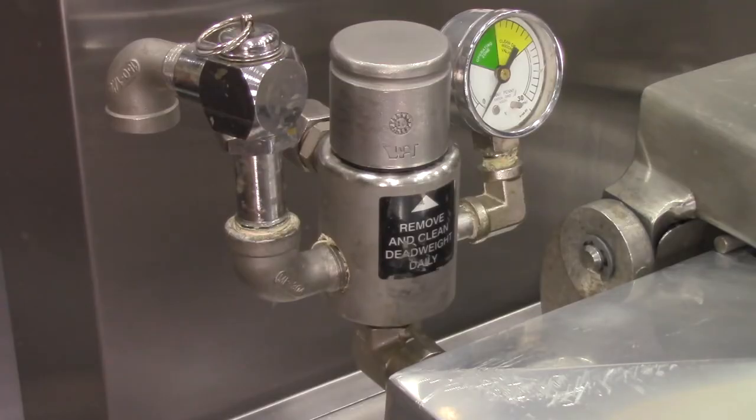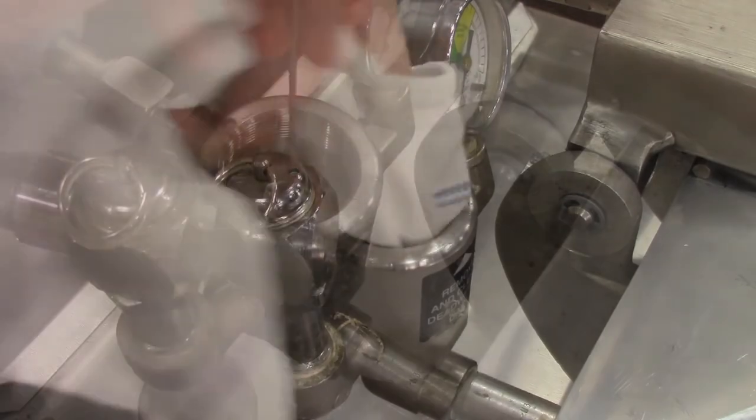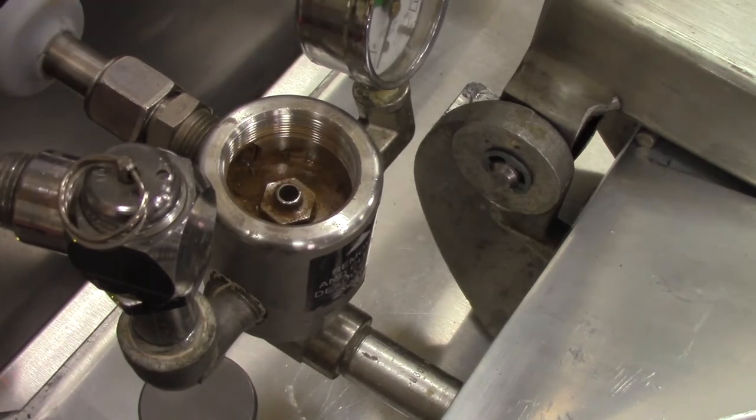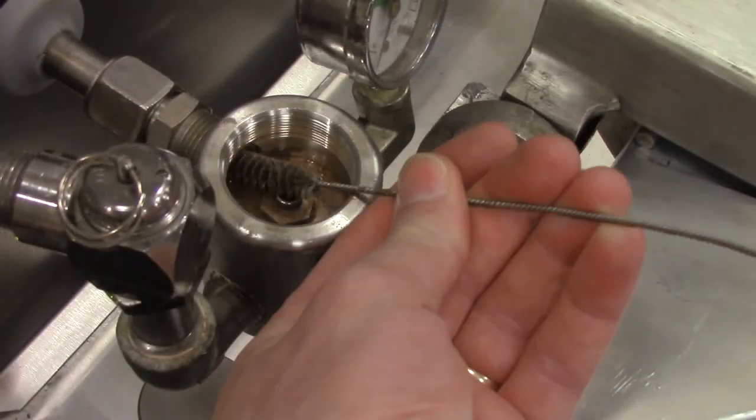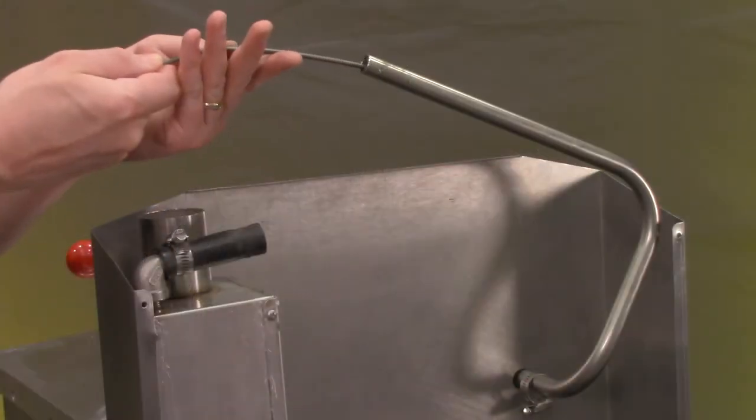Inspect the deadweight valve. If the weight is sticking, clean this valve and orifice so it becomes operational again, and then clean all the plumbing on the deadweight side of the fryer from the fry vat all the way back to the steam exhaust stack.